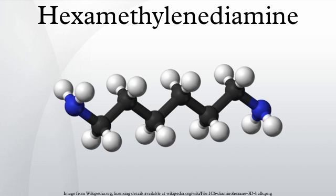Hexamethylenediamine is used almost exclusively for the production of polymers, an application that takes advantage of its bifunctional structure. The great majority of the diamine is consumed by the production of nylon-66 via condensation with adipic acid. Otherwise, hexamethylene diisocyanate is generated from this diamine as a monomer feedstock in the production of polyurethane. The diamine also serves as a cross-linking agent in epoxy resins.